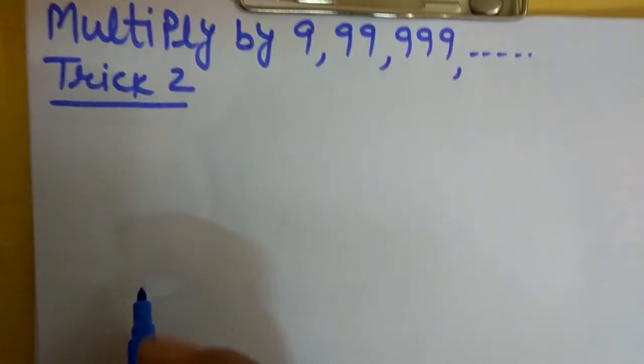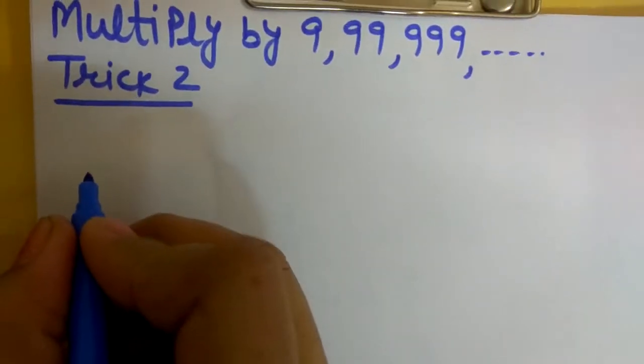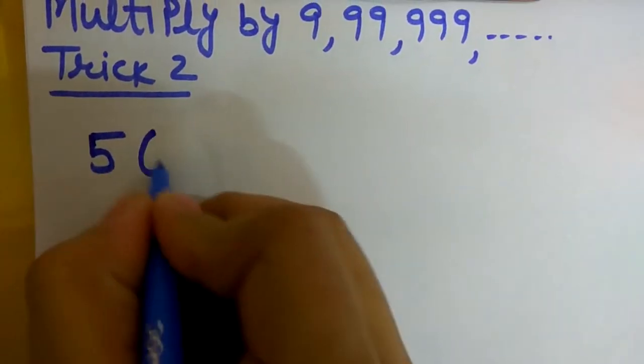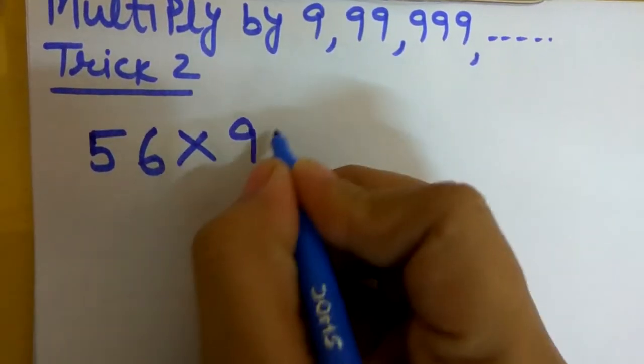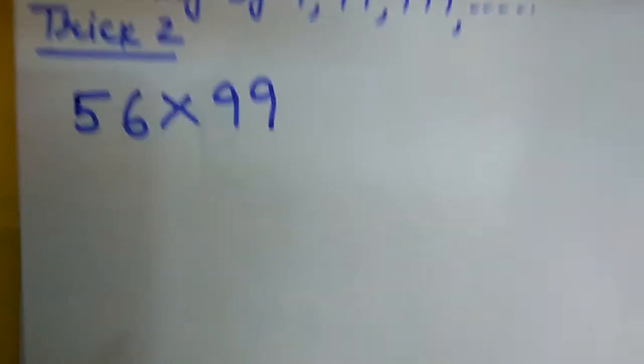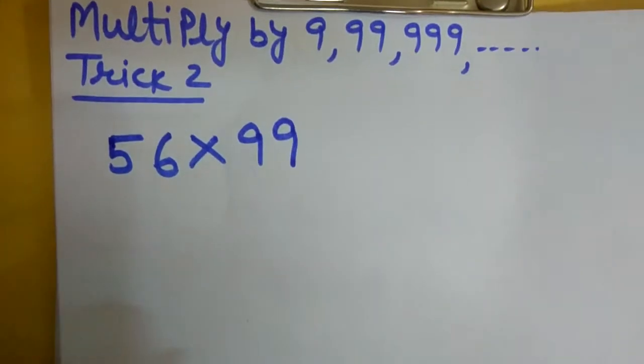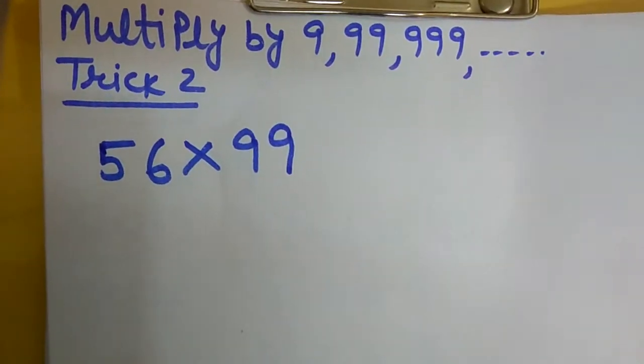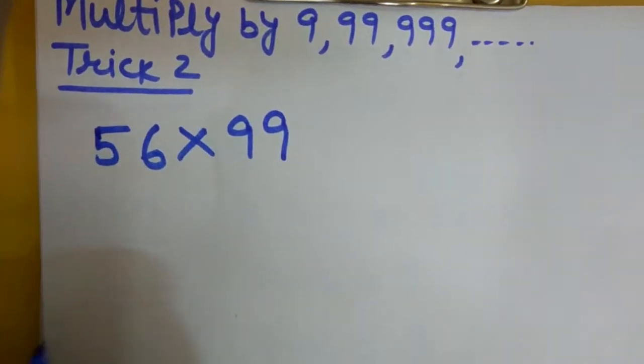We can choose a number like 56 multiply by 99. Simply, we can see 99 and triple nine. Now see step one.